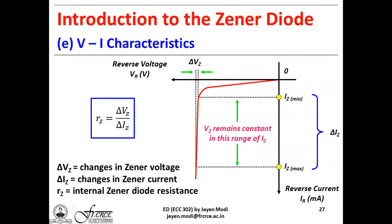From the reverse biased VI characteristics, an important parameter is the internal resistance of the Zener diode RZ, defined as the change in Zener voltage delta VZ divided by the change in Zener current delta IZ. Since delta VZ is extremely small while delta IZ is relatively larger, the internal Zener diode resistance is also extremely small — typically less than a few ohms. In cases where delta VZ approaches zero, RZ approaches zero. Practically, Zener diodes used in the laboratory have RZ typically around a few ohms.